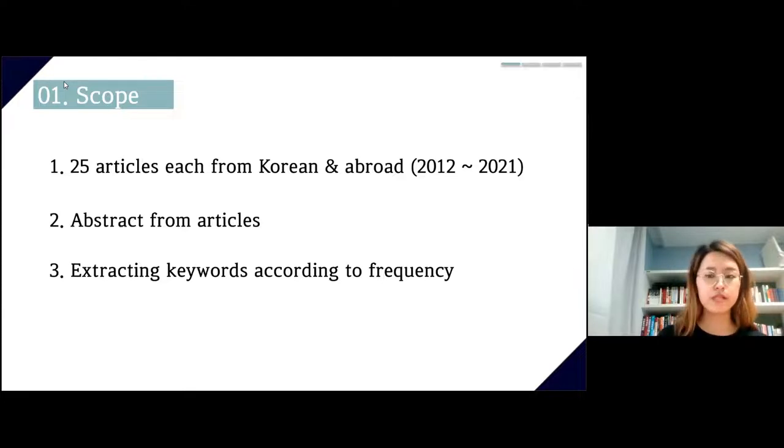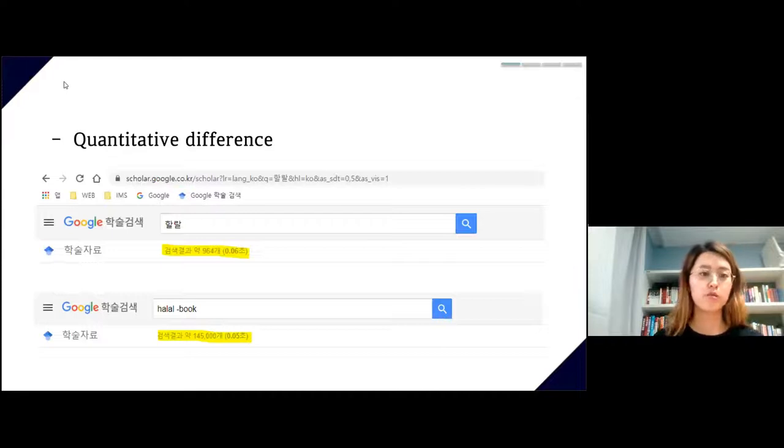I used Google Scholar. When you search Halal and exclude books in the same period, you'll see a significant difference. Korean research gives you 964 articles, while overseas research gives 145,000. This is a very huge difference.